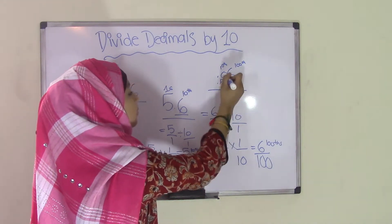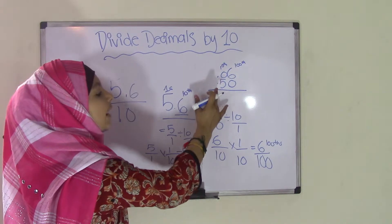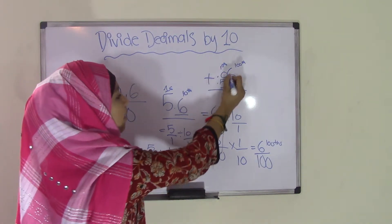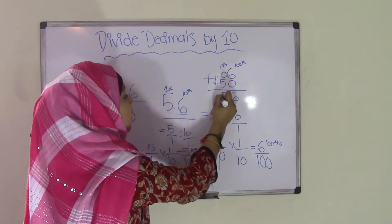Now, if we add 0.06 or 6 hundredths plus 5 tenths, we get a sum of 6 plus 0 is 6. 0 plus 5 is 5. Bring down the decimal point.